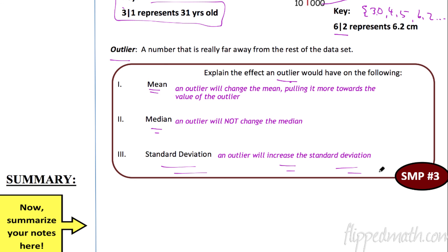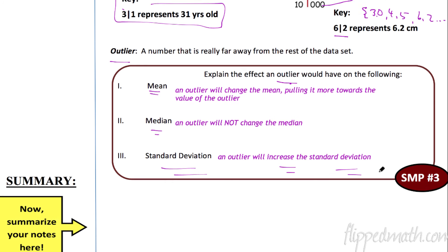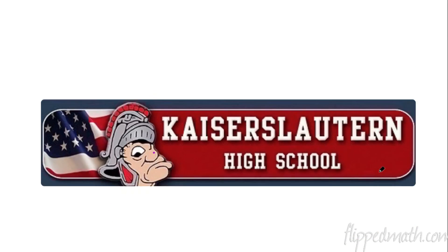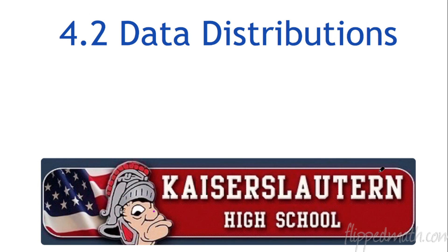That's it — 14.2, we're all done. Hopefully you can answer the question of who's your data. We're looking at distributions. This is Mr. Kelly at Kaiser Slaughter. Remember, it's nice to be important, but more important to be nice. See you.